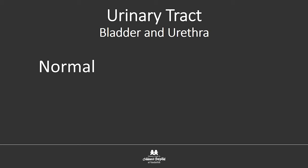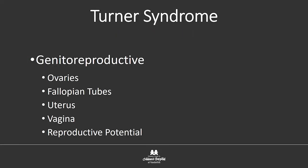Bladder and urethra are typically normal in folks with Turner syndrome, so not really anything to talk about there. Anything bladder or urethra-wise is just normal urology — part of being a person, not necessarily part of having Turner syndrome. If you have UTIs, they need to be evaluated. As a baby, if you're diagnosed with Turner syndrome, you will have an ultrasound of the kidneys to identify horseshoe, duplicated, or absent kidney, so you know what to look for going forward. If you have symptoms, get evaluated; if you don't, you're fine.